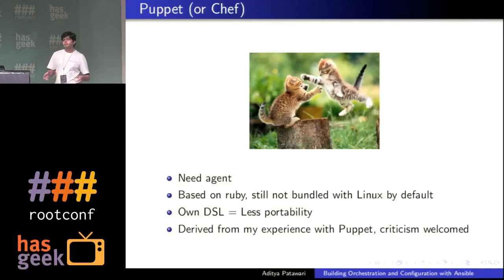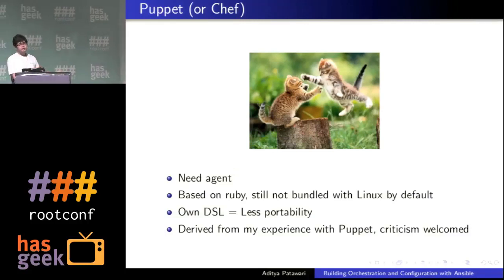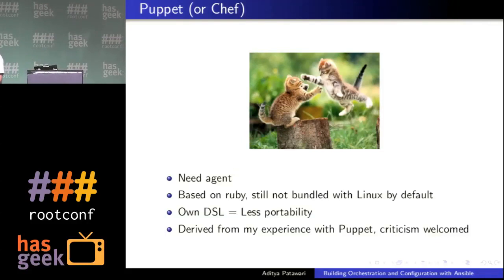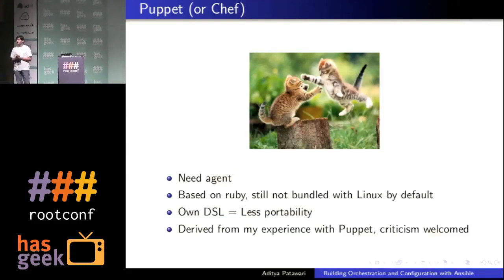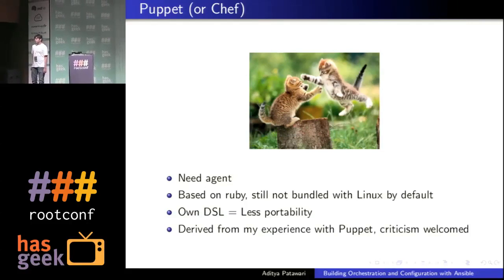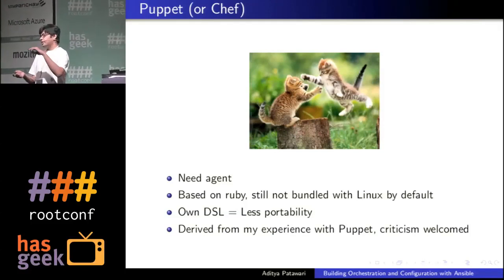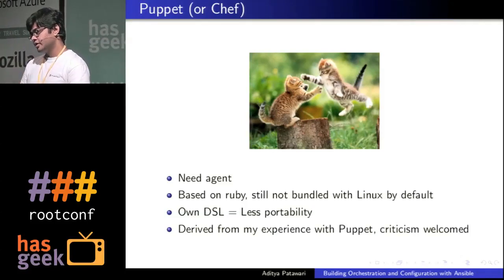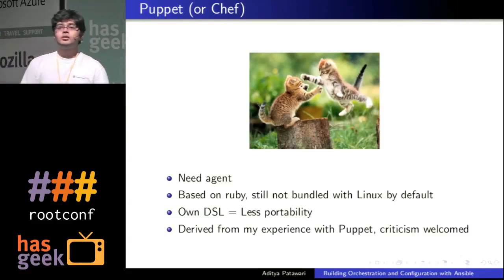My experience with Puppet has been a bit limited, so I welcome any criticism. Node-less Puppet doesn't help with the Ruby installation problem. Signature problems with AMIs also exist — you have to verify with the Puppet master, so you'd make an agentless Puppet AMI, and as soon as it boots you have to do a git pull to get your entire configuration and do all those steps before the server becomes usable.